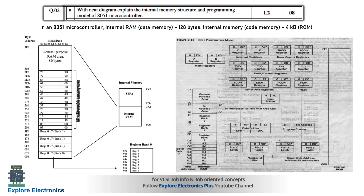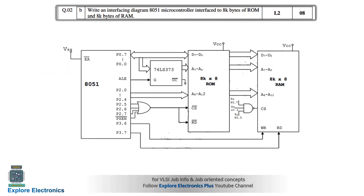The next question is: write an interfacing diagram of the 8051 microcontroller interfaced to 8K bytes of RAM and 8K bytes of ROM. The 8051 microcontroller will be connected to ROM as well as RAM through its ports — all external devices are connected through the ports only. For the 8K×8 ROM, the data is 8-bit wide, and the data pins come from Port 0 pins 0 to 7 for data, which also act as address lines.